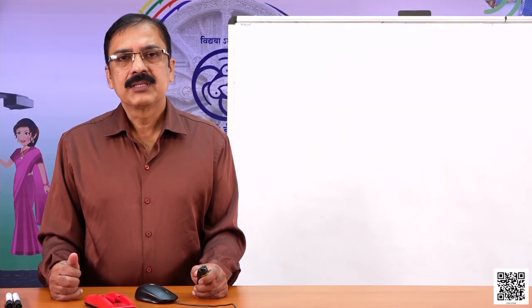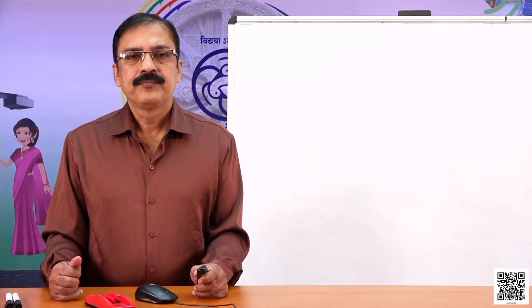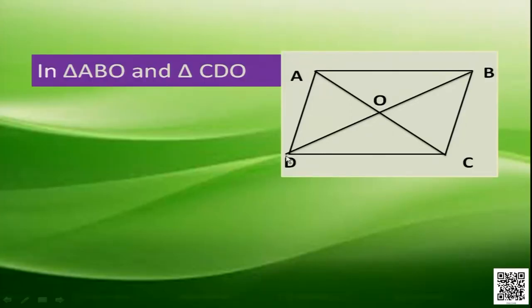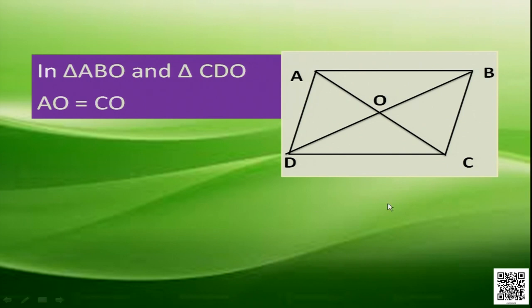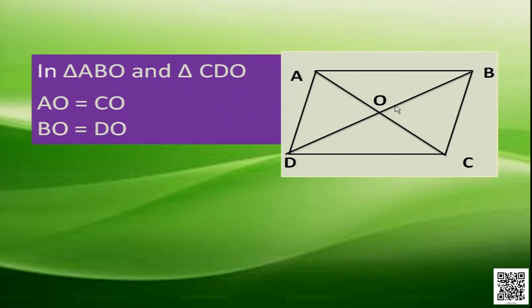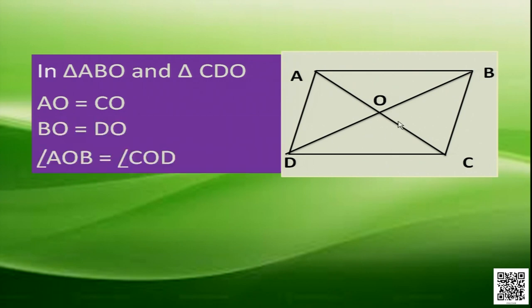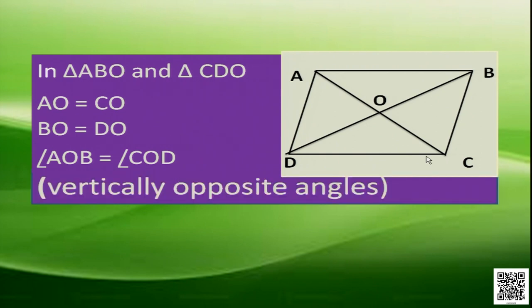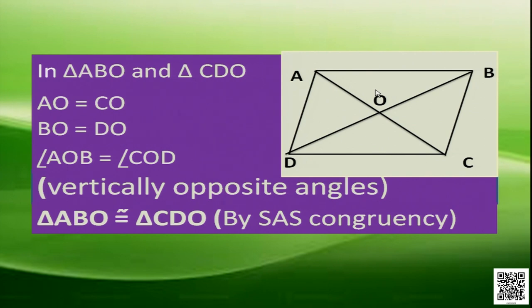In triangles ABO and CDO, we have AO equal to CO, and BO equal to DO. Also angle AOB is equal to angle COD because they are vertically opposite angles. So we have side-angle-side. Thus triangle ABO and triangle CDO are congruent by side-angle-side congruency.